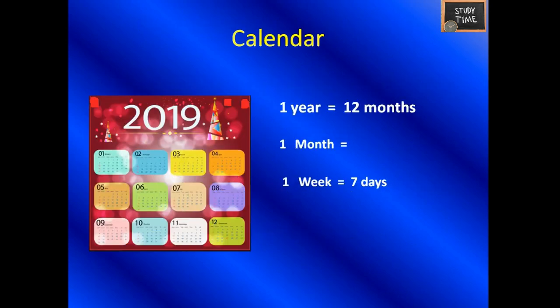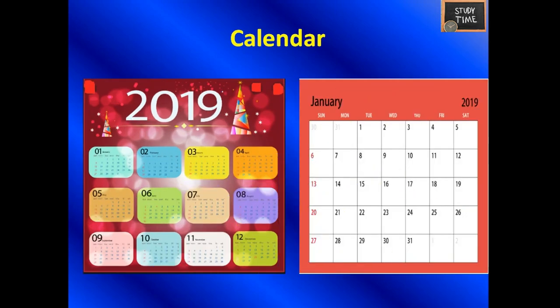In a calendar: 1 year equals 12 months, 1 month equals 28, 29, 30, or 31 days, and 1 week equals 7 days. A calendar can be a yearly calendar showing all 12 months, or a monthly calendar representing each month separately. In some places you might also see a daily calendar.